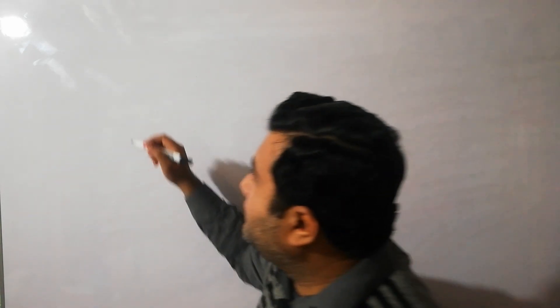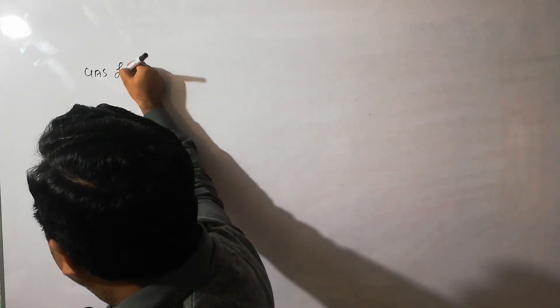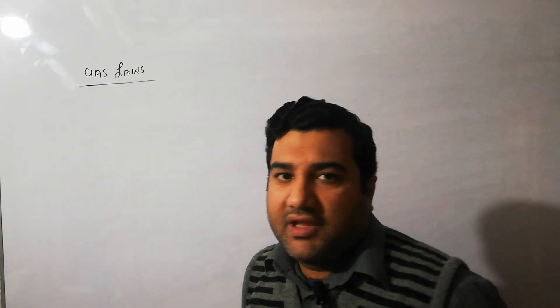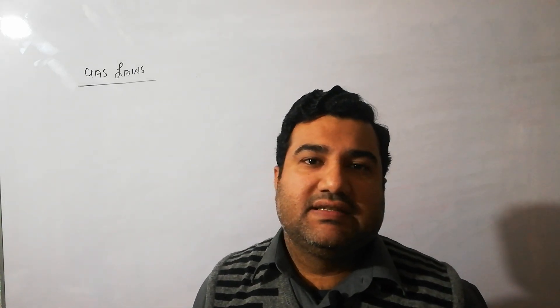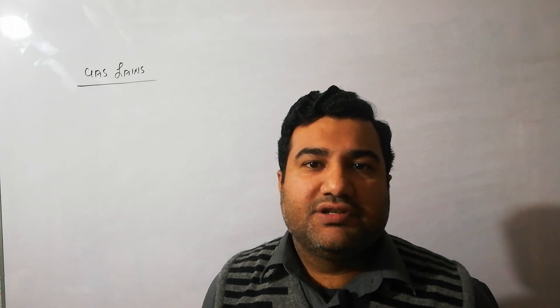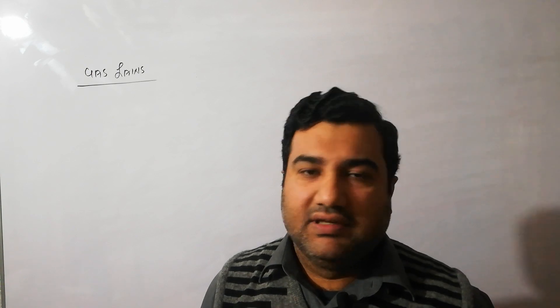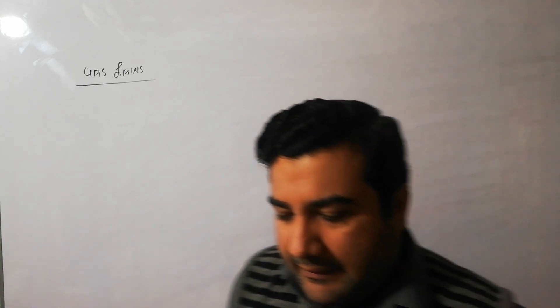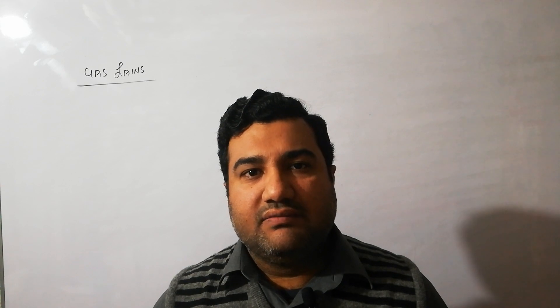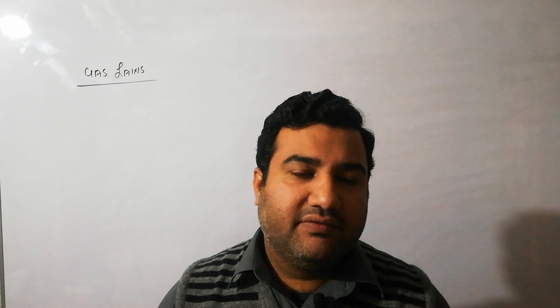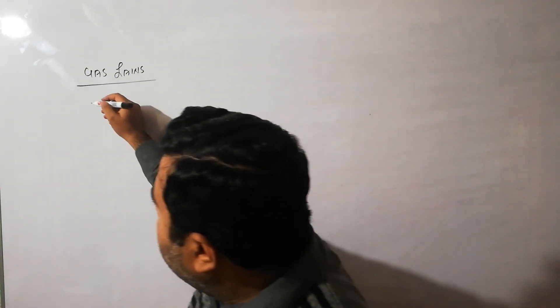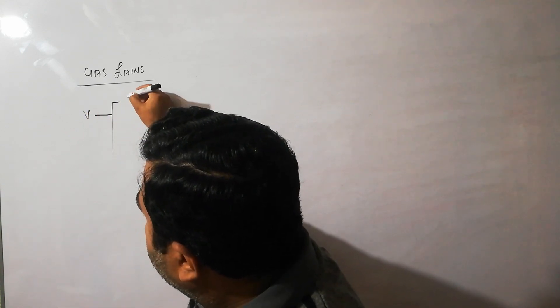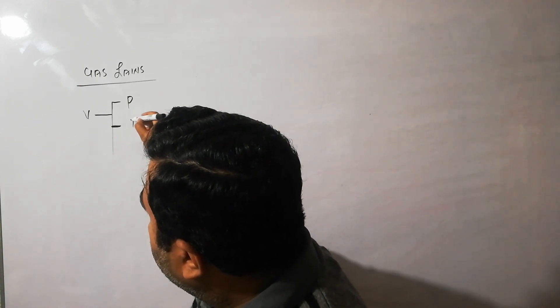Welcome again. We have started the chapter on gases. In the last lecture we discussed the introduction of the states of matter and some basic properties of the gaseous state. Now from this lecture we are going to start the gas laws — the laws that explain the uniform behavior of gases. When external conditions like temperature or pressure are changed, all gases show the same behavior: by increasing pressure, the volume of the gases decreases.